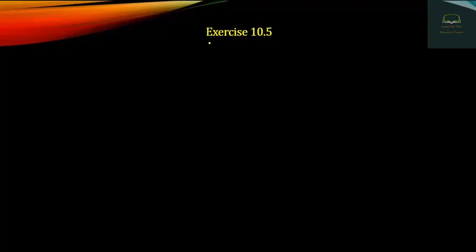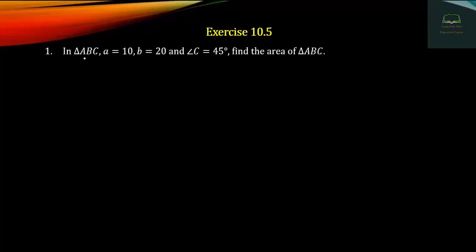Question number one: In triangle ABC, small a equals 10, small b equals 20, and angle C equals 45 degrees. Find the area of triangle ABC.